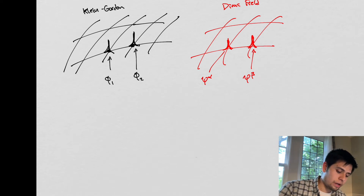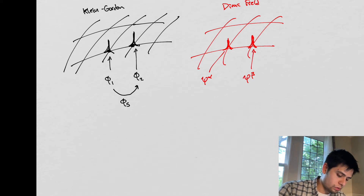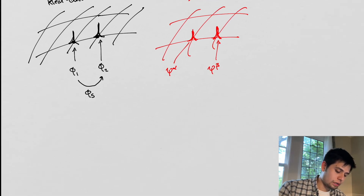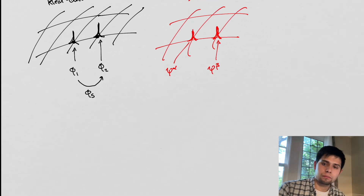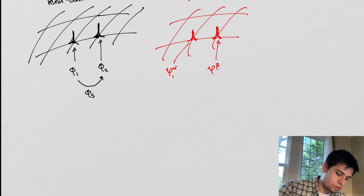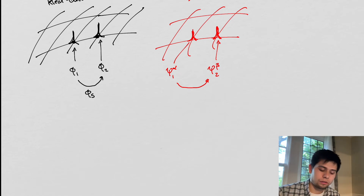The way we talk about these interactions — as we've said in the Klein-Gordon case — is through the Green's function, the Green's function for the Klein-Gordon equation. In that case, we don't have components. But in the case of our spinors, we need to take into consideration the interactions that are occurring between all the components.